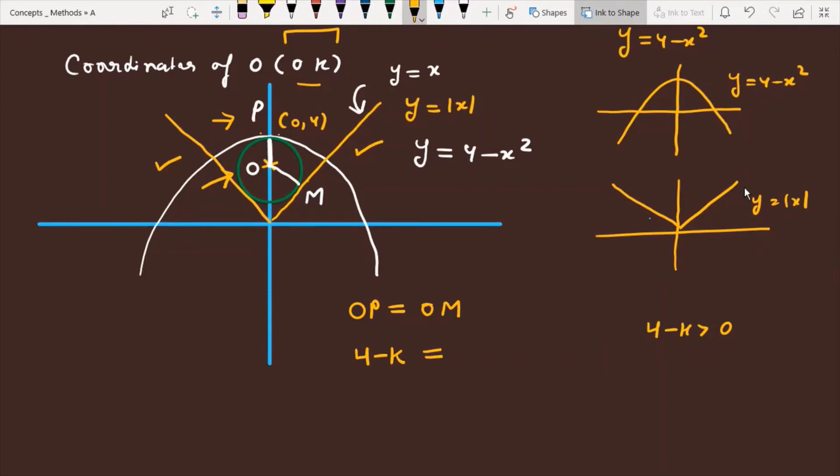Now let's talk about OM. To calculate OM, the best option is that O's coordinate is (0, k). And this line y equals mod x, if I use the right-hand side branch, this branch you have y equals x, and what I want to do is from (0, k) plot the perpendicular to the given line, which will give us OM.